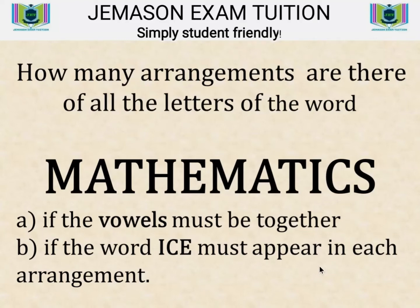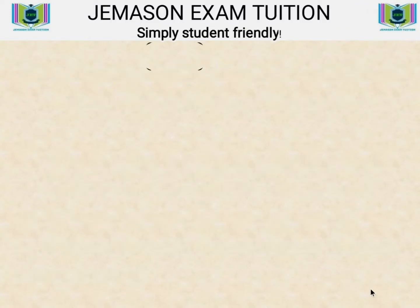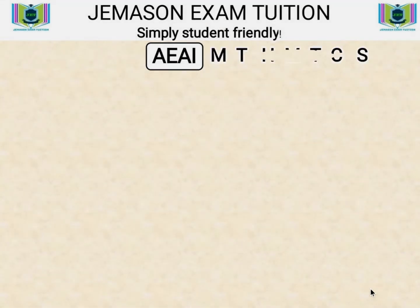Hello, welcome. In this session we look at this question on permutations: how many arrangements are there of all the letters of the word MATHEMATICS if (a) the vowels must be together, and (b) the word ICE must appear in each arrangement. To begin, we have to separate the vowels from the consonants.